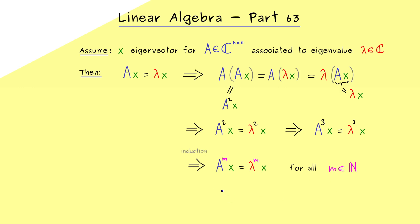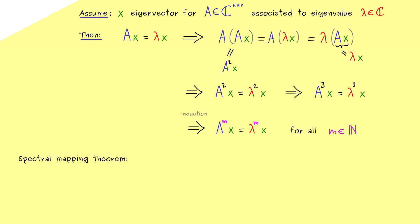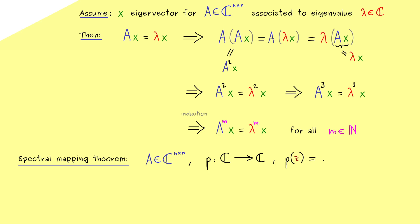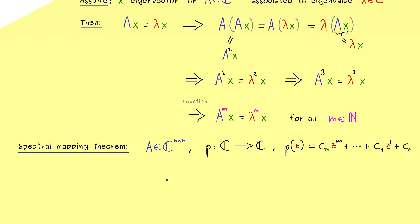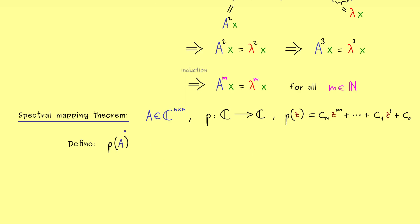This is exactly the spectral mapping theorem we will now discuss. It tells us what happens to the spectrum of a matrix under a map — and for our context, this map will be a polynomial p. Everything is complex-valued, so we map ℂ into ℂ. Every polynomial can be written with coefficients as p(z) = c_m · z^m + ... + c_0, which is a general polynomial of degree m. Corresponding to this polynomial p and the matrix A, we define a new matrix p(A) by putting A into the polynomial.